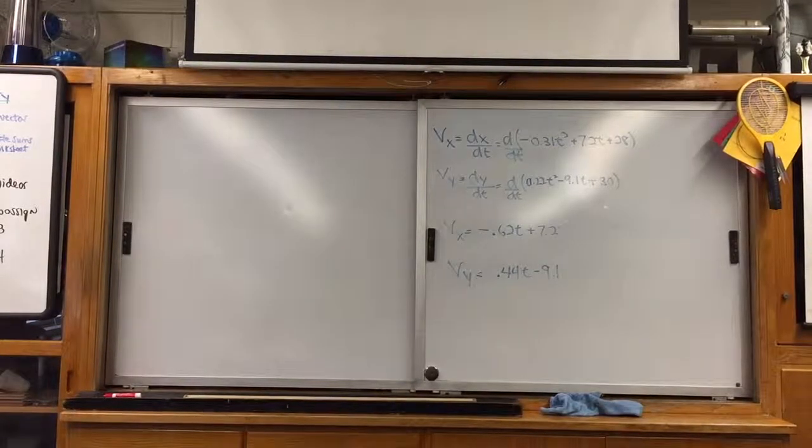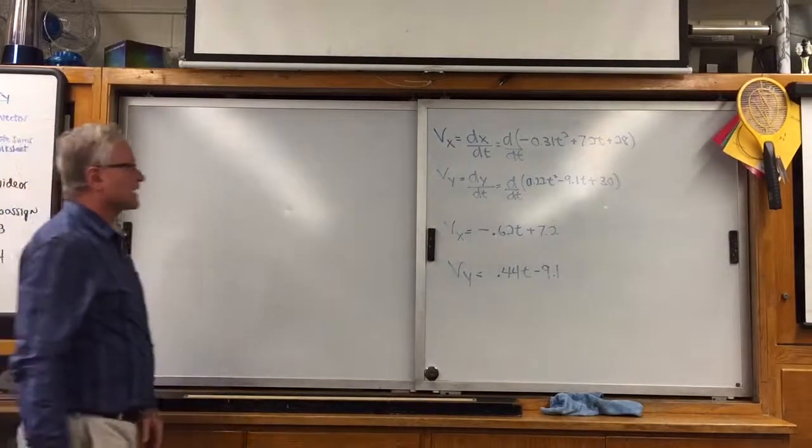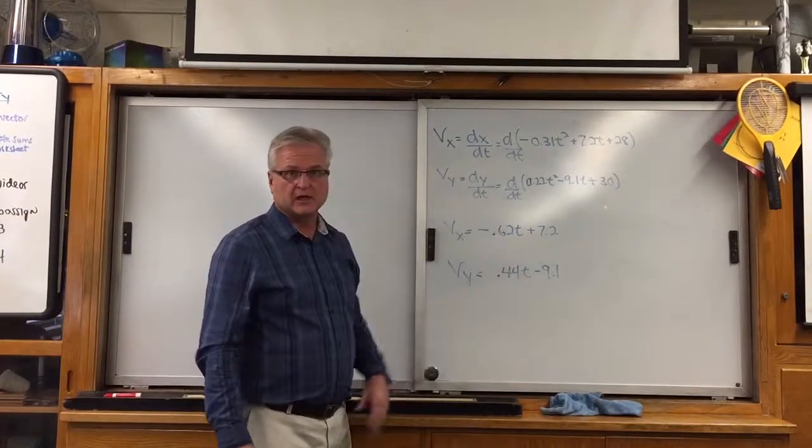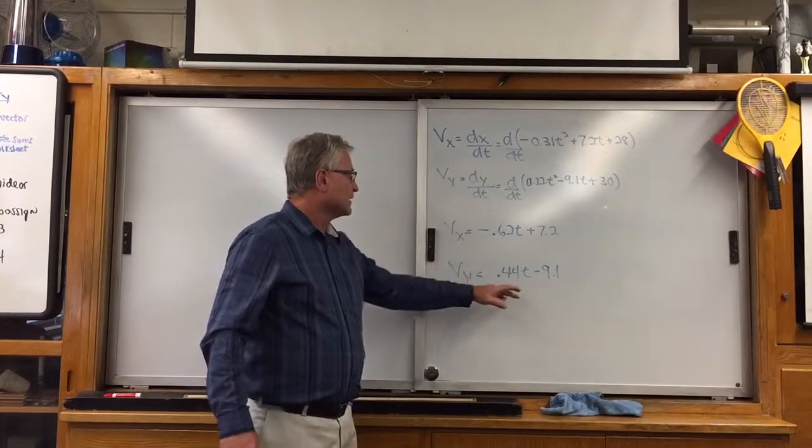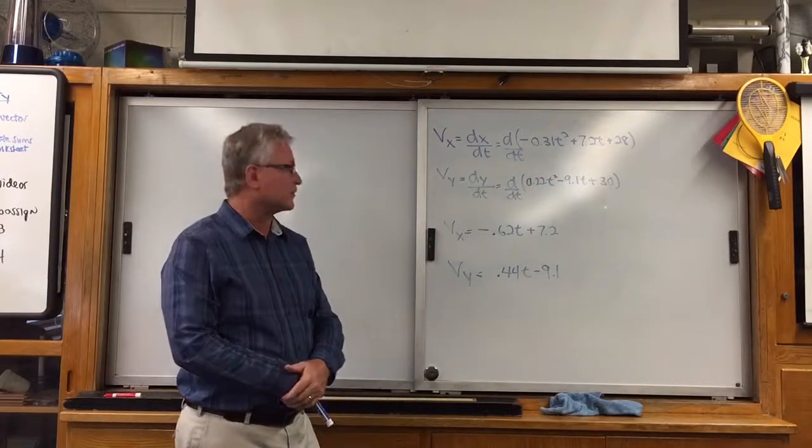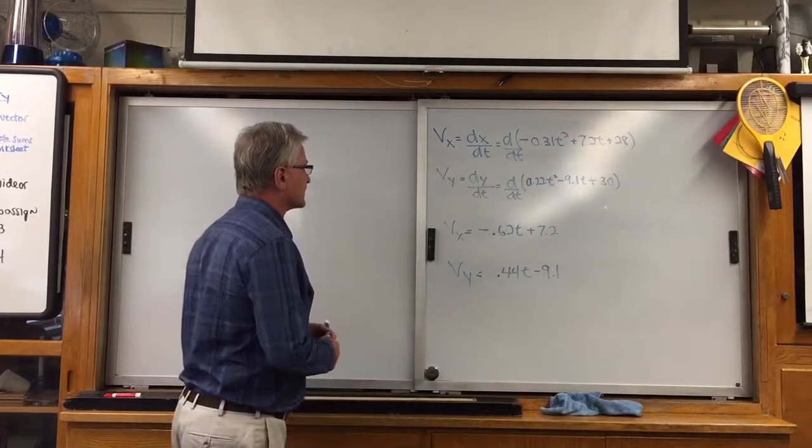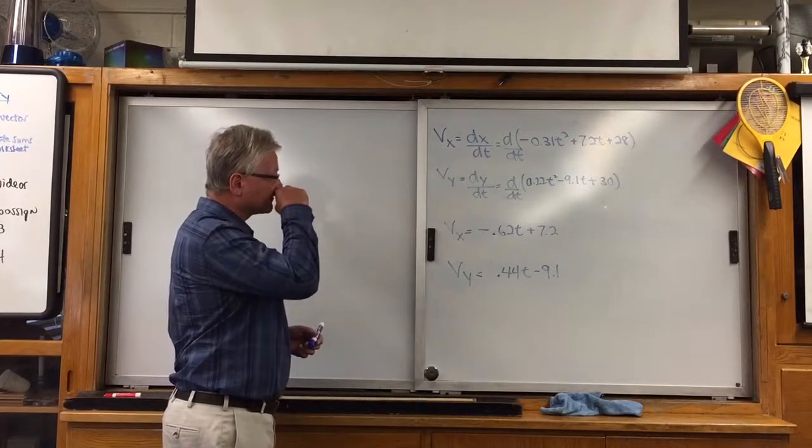All right, let's look at our results. We've got these velocities, we've got a nice formula for the velocity in the x direction for the rabbit, and a nice velocity formula for the y for the rabbit. So let's stick these together and let's actually solve this.